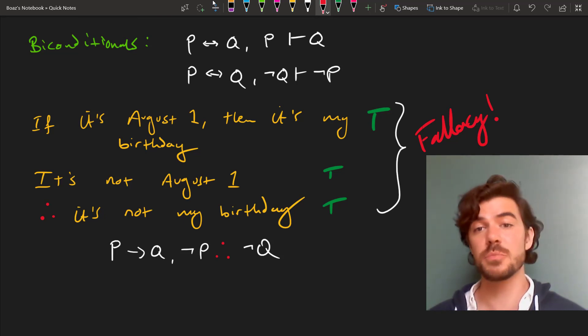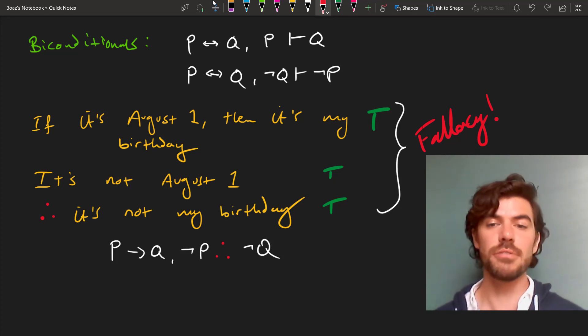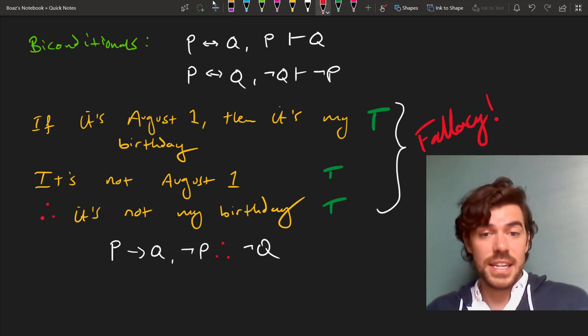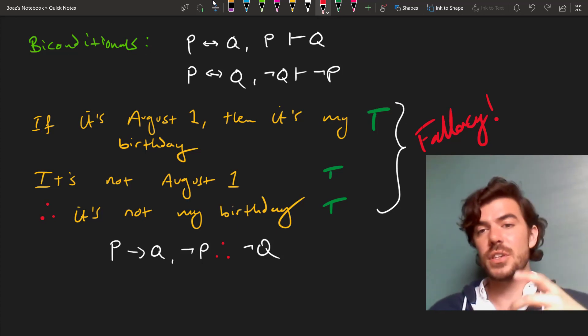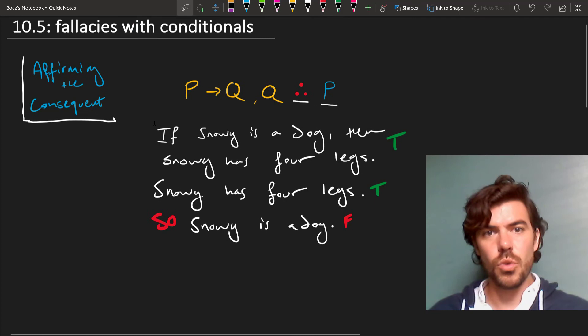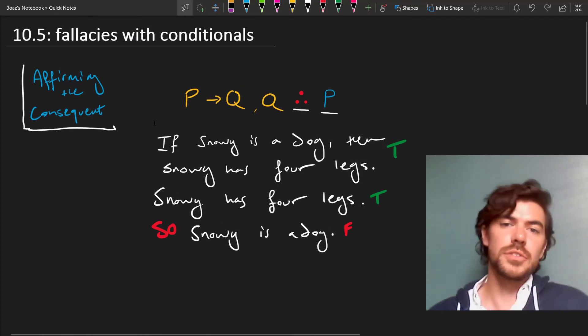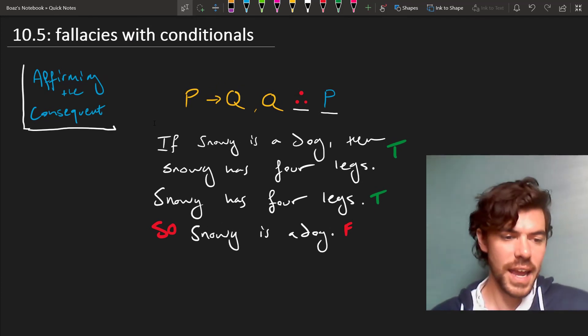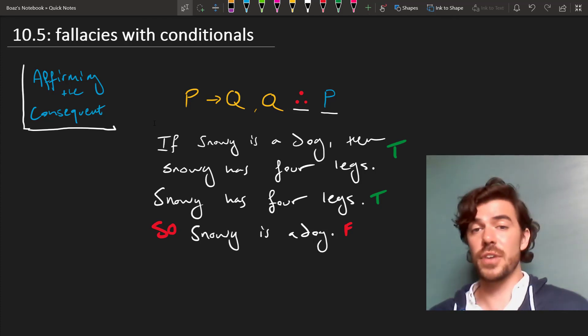So I think that this is partly why there are instances of these fallacious arguments with conditionals: affirming the consequent and denying the antecedent. And they aren't always as obvious as these little toy examples we've given here. So it's worthwhile to be aware of these because you will find them out there. And they can be a little bit trickier than the examples we've given just to illustrate how they work.